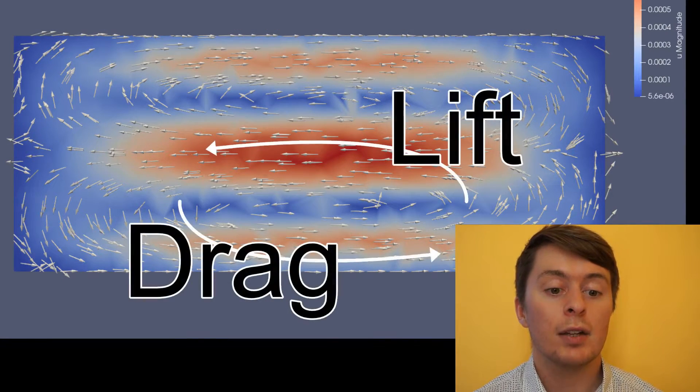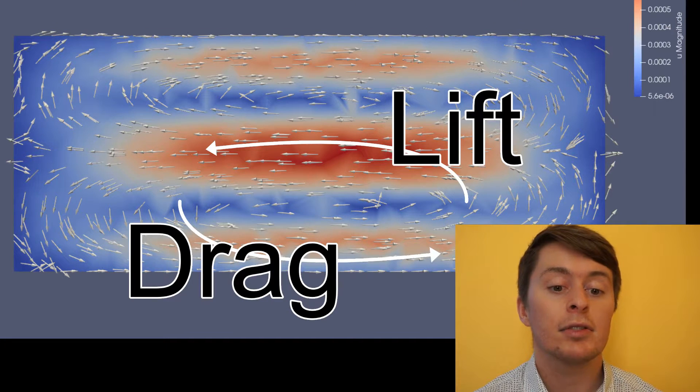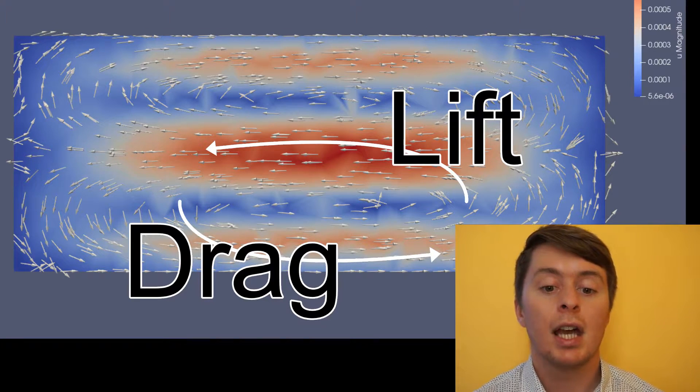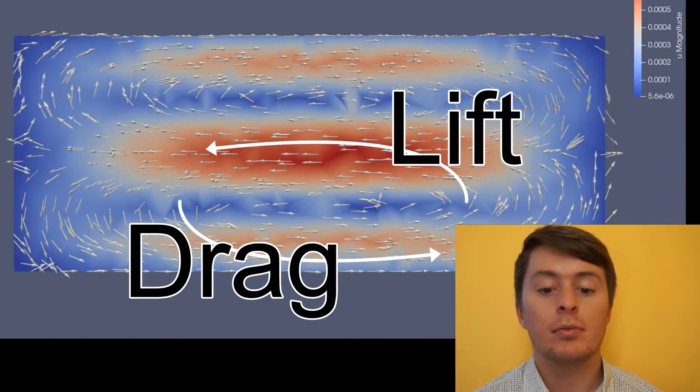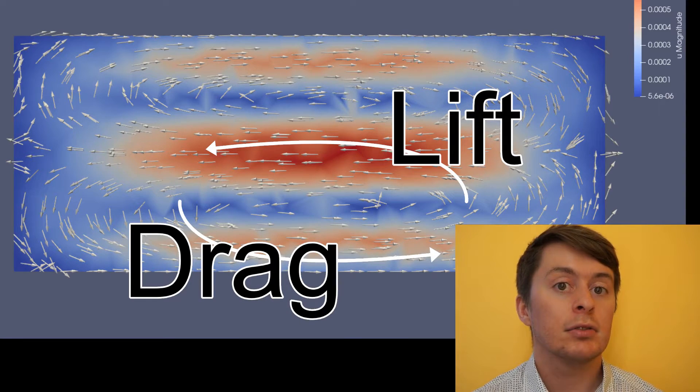Briefly, the particle separation occurs by the strength of the lift and drag forces acting upon the cells and or particles which are formed by two vortexes in the channel. Controlling the lift and drag can provide precise particle separation.